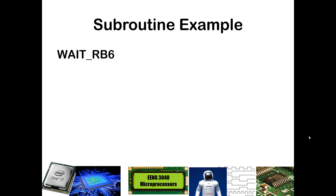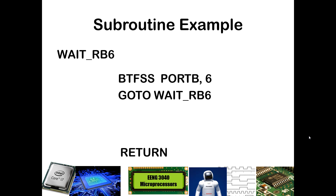We'll label it wait_RB6 — underscores are fine in names, spaces are not. Inside, we do a BTFSS — bit test F skip if set — on port B bit 6. If port B bit 6 is a logic 1, it skips over the GOTO wait_RB6 and hits the return statement. If it's not a 1, it goes to that GOTO wait_RB6 and loops back to the beginning of the subroutine, repeating until the bit test is finally satisfied, after which it hits the return.